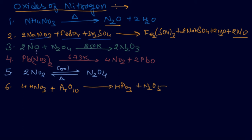Third is dinitrogen trioxide, N2O3. We can get it by reacting nitric oxide with N2O4 at 250 Kelvin to get N2O3. It is a blue solid and acidic in nature.